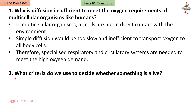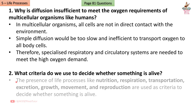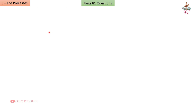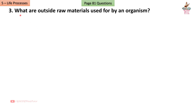Question 2: What criteria do we use to decide whether something is alive? Answer: The presence of life processes like nutrition, respiration, transportation, excretion, growth, movement, and reproduction are used as criteria to decide whether something is alive.